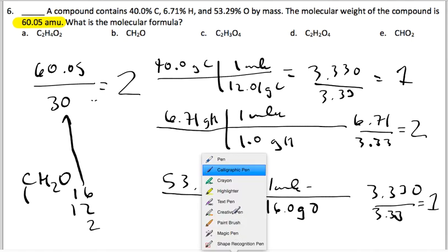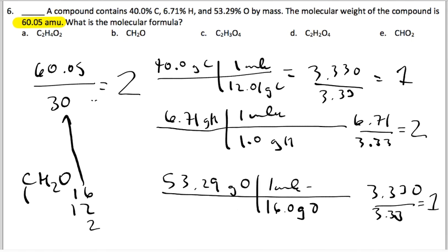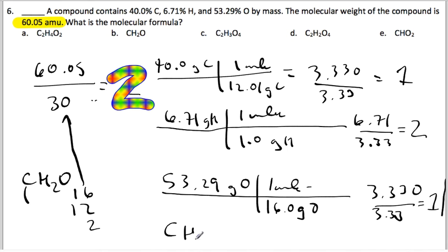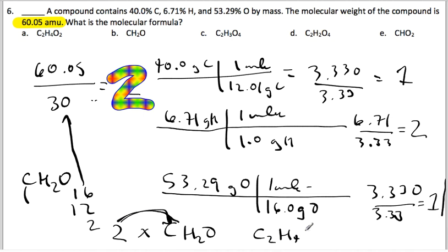The magic number is 2. I'm going to use a rainbow to highlight the magic number. We take CH₂O and multiply by the magic number: C×2 = C2, 2×H = H4, and O×2 = O2. So the molecular formula is C₂H₄O₂ — that's your correct answer.